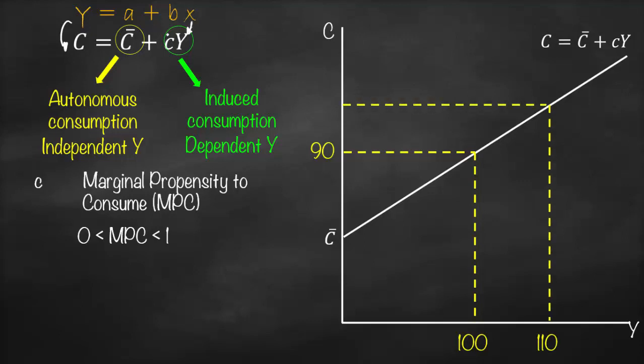So what will be our slope? Our slope will be our change in consumption divided by change in income. Therefore, our little c is change in C divided by change in Y.